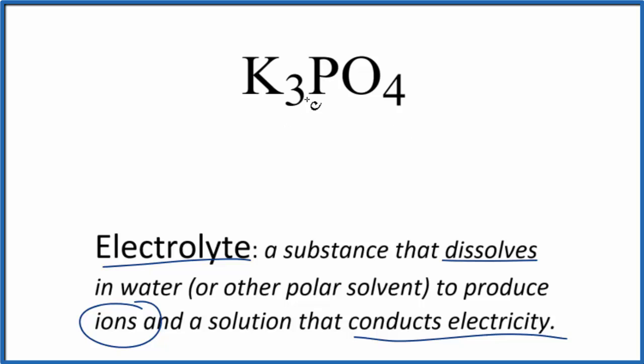For potassium phosphate, potassium is a metal. The phosphate ion is a group of non-metals, a polyatomic ion. So this is an ionic compound, so we have ions, but will it dissolve in water?